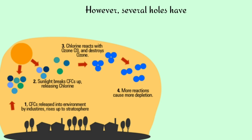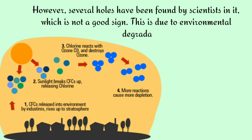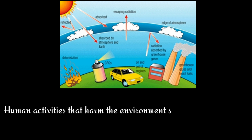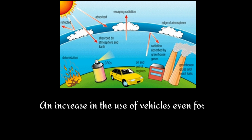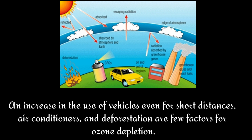However, several holes have been found by scientists in the ozone layer, which is not a good sign. This is due to environmental degradation and the rise in temperature. Human activities that harm the environment should be monitored regularly. An increase in the use of vehicles, even for short distances, air conditioners, and deforestation are a few factors for ozone depletion.